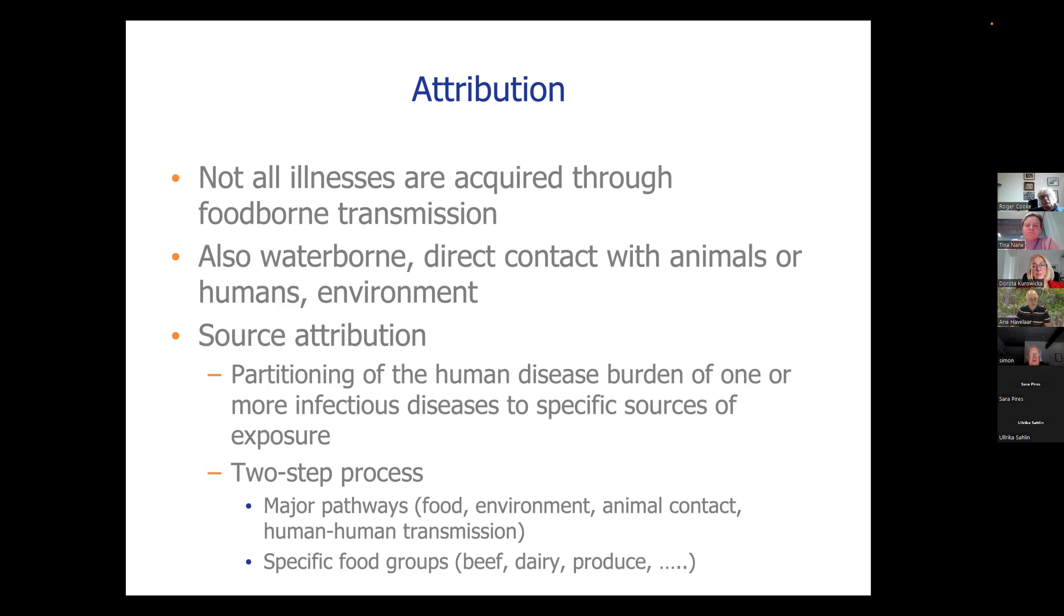So the next step is then source attribution. And Sarah, when she did her PhD work, authored a review that is still considered one of the leading reviews in this area. She defined source attribution as partitioning of the human disease burden of one or more infectious diseases to specific sources of exposure. And this definition, I think, is generic. It doesn't only hold for foodborne diseases, it holds for every disease. For example, even COVID-19, there is the idea that partly it could be transmitted through contact with contaminated surfaces or other pathways. So every disease, although there can be a very dominant pathway, but there will always be parts of the transmission by other pathways.